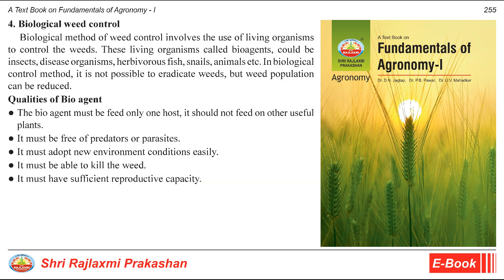Biological Weed Control. Biological method of weed control involves the use of living organisms to control weeds. These living organisms, called bio-agents, could be insects, disease organisms, herbivorous fish, snails, animals, etc. In the biological control method, it is not possible to eradicate weeds, but the weed population can be reduced.